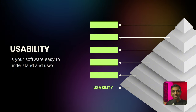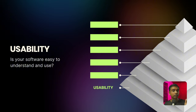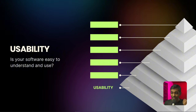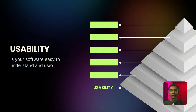At the bottom of the pyramid is usability — the bedrock of software success. This is one of the most important and sometimes non-intuitive things I have observed over the last 13 years of building software. This became clear when I saw how users struggled with complex interfaces. Even the most powerful software became totally useless if people couldn't figure out how to use it. Usability is therefore fundamental and non-negotiable.